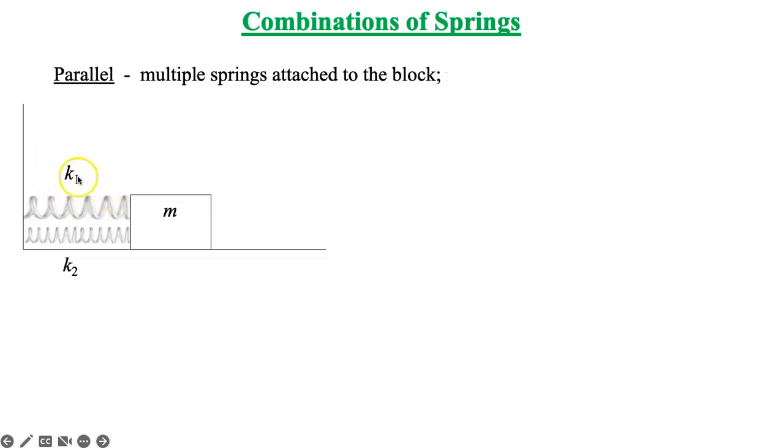So I'll call spring 1 a spring constant of k1 and spring 2 a spring constant of k2. And notice I'm trying to draw them a little bit differently. The top one here is sort of a heavy duty spring and the bottom one is a lighter weight spring. Let's say they start at their equilibrium position. That would be x equals 0. I'm going to apply a force and pull the mass out stretching both springs through a distance x.